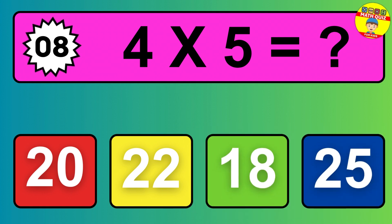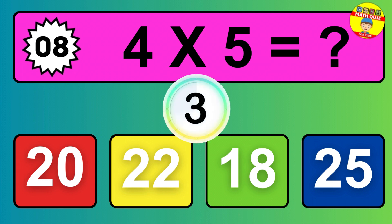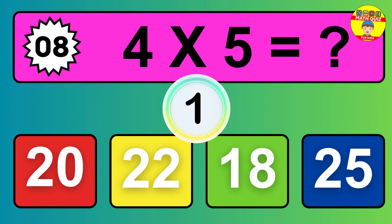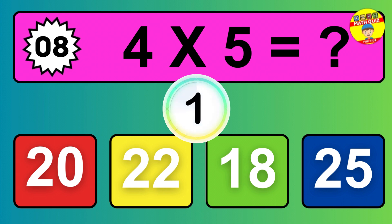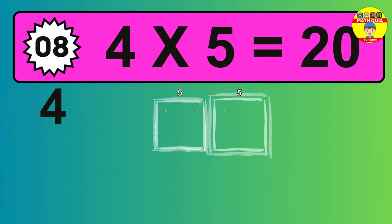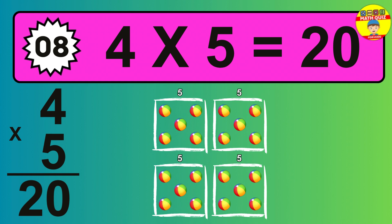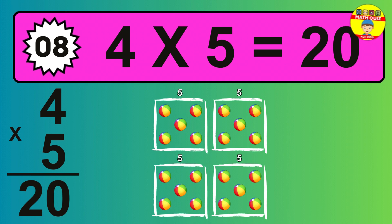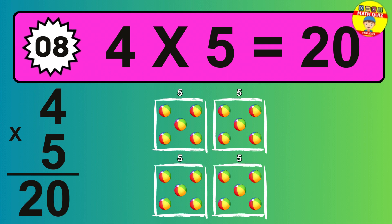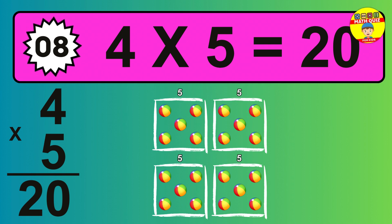Question 8. 4 times 5 equals what? The answer is 4 times 5 is 20. To calculate, we have 4 groups with 5 balls each one. So how many balls do we have? 20 balls.